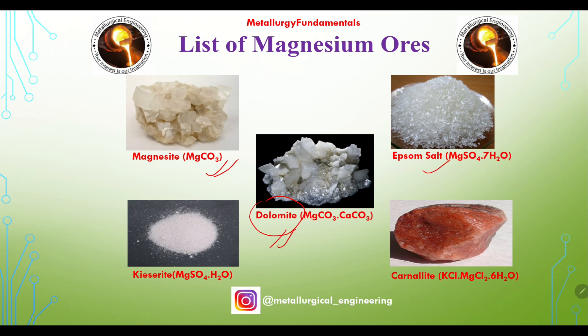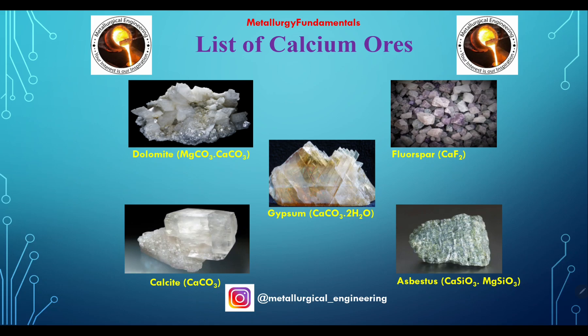Kieserite is MgSO₄·H₂O, and carnallite is KCl·MgCl₂·6H₂O. Next is the list of calcium ores. Dolomite, MgCO₃·CaCO₃, is also an ore of calcium, along with gypsum.